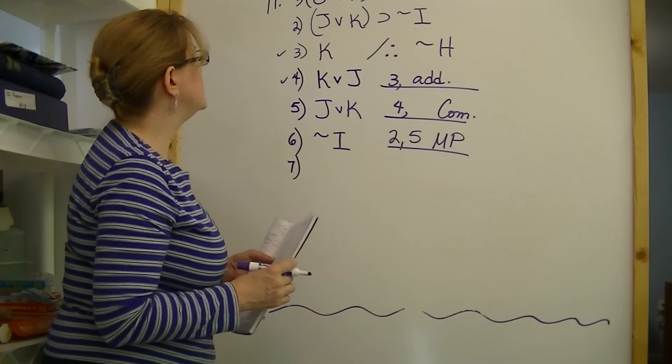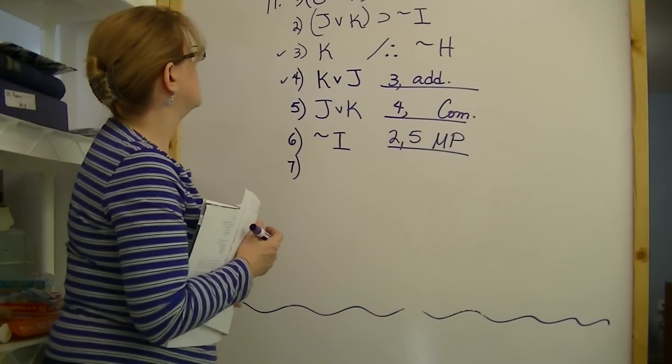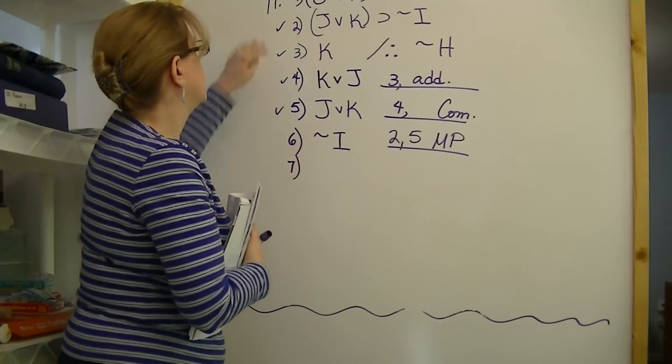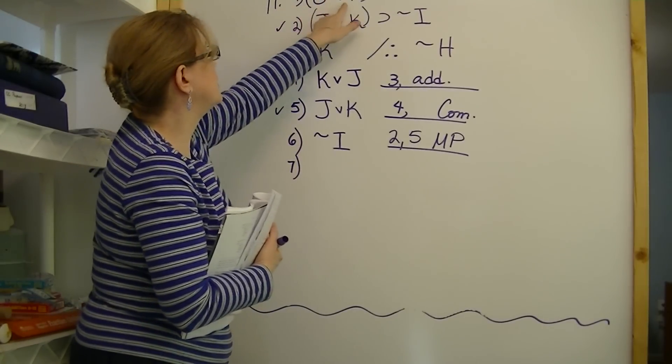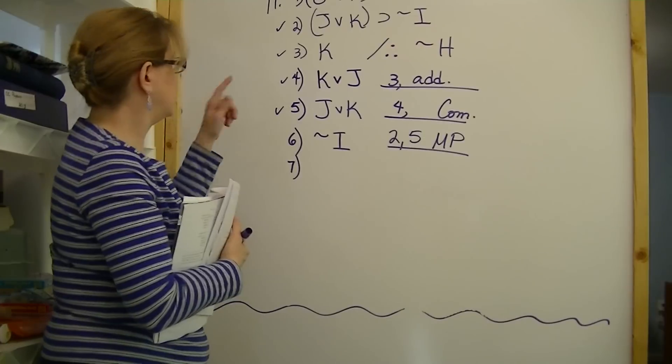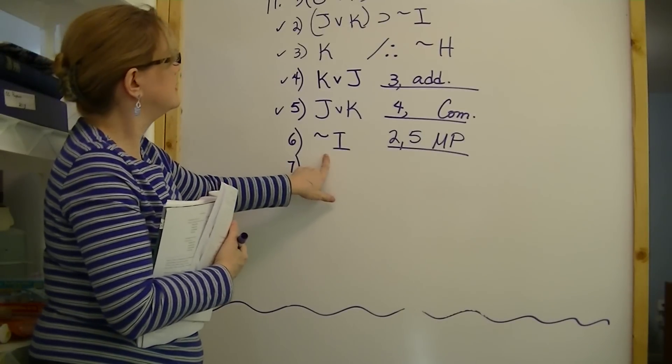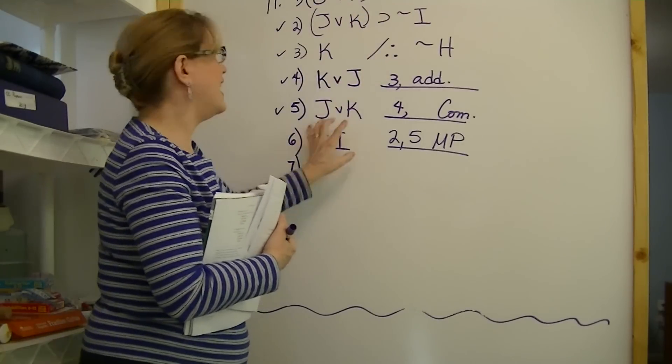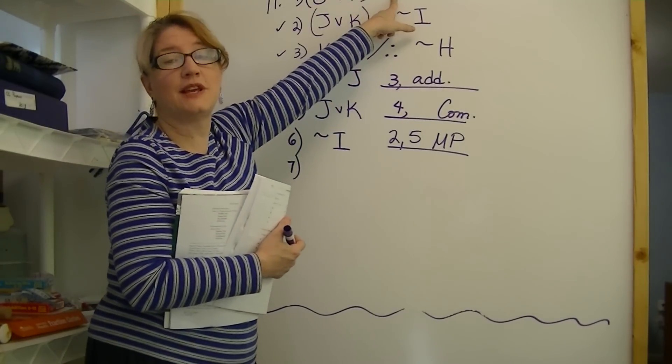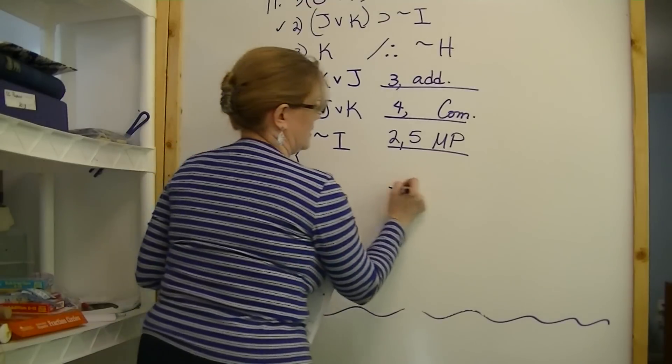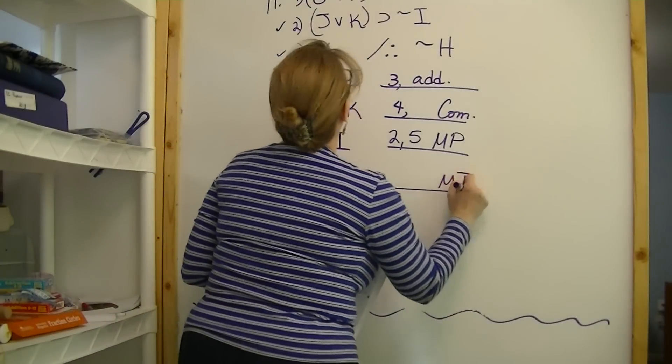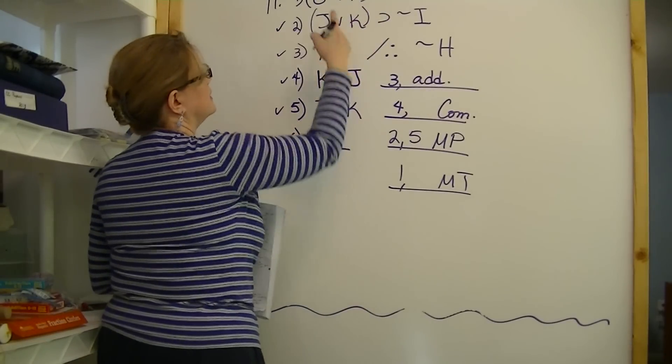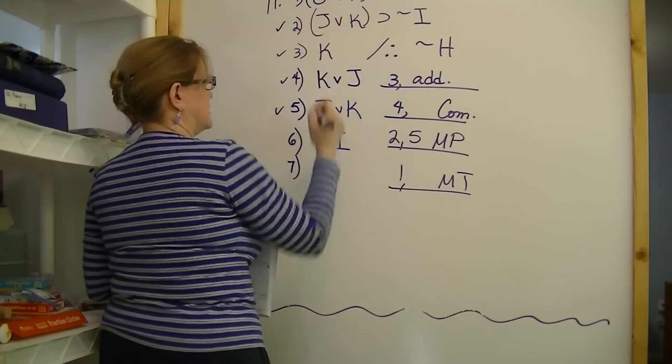What else can we do here? We've used line two. We've used line five. We've still got line one. G or H. If G or H, then I. Not I. If G or H, then I. Not I. Denying this. So we can use modus tollens here. From line one. And derive not G or H. Not either G or H. I'm negating the whole thing.